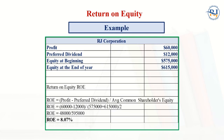Let's work through an example. RJ Corporation has a profit of $60,000, preferred dividend of $12,000, equity at the beginning of $575,000, and equity at the end of $615,000. Return on Equity = (60,000 − 12,000) / ((575,000 + 615,000) / 2) = 48,000 / 595,000 = 8.07%. That is the ROE for the company.